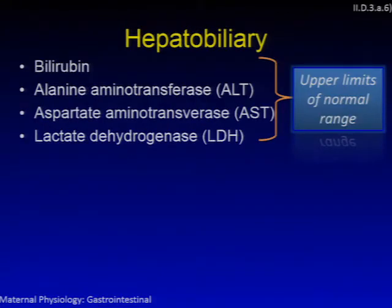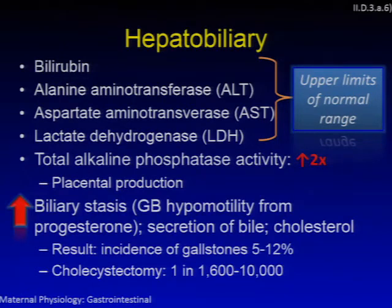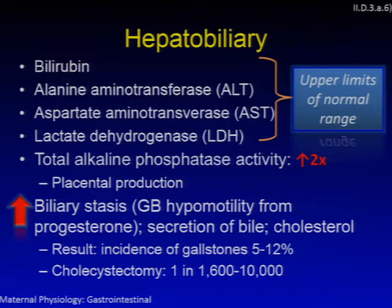There are hepatobiliary changes as well. Bilirubin, ALT, AST, and LDH are all within the upper limits of normal at term pregnancy. Alkaline phosphatase activity is increased by a factor of two, partly due to increased placental production. Biliary stasis risk increases significantly during pregnancy through gallbladder hypomotility from progesterone and increased secretion of bile and cholesterol. Pregnant women have an incidence of gallstones of 5 to 12%, and cholecystectomy is actually one of the most common non-obstetric surgeries during pregnancy at 1 in 1,600 to 10,000.